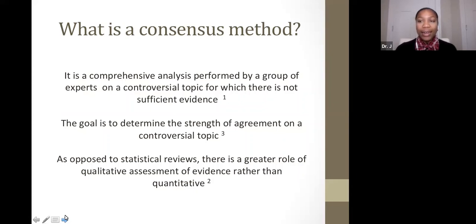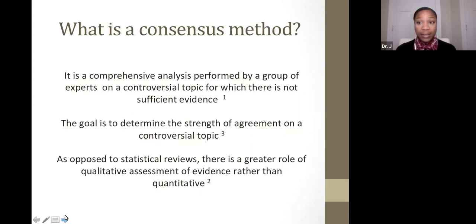Now, in contrast to statistical reviews, consensus methods have a greater role of qualitative assessment of evidence rather than quantitative. Statistical methods such as meta-analyses are used to differentiate and resolve differences amongst various studies, whereas consensus methods pull in a broader range of information and bring in a panel of experts to make decisions on topics for which there is inadequate or lacking information.